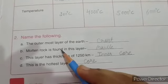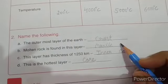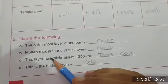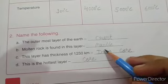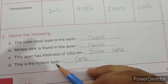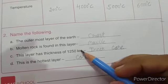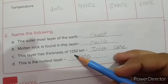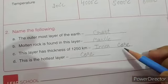Next is named the following. The outer most layer of the earth is crust. Molten rock is found in the layer mantle. This layer has thickness of 1250 km.